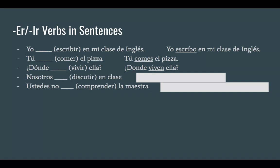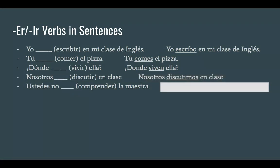We're going to do 'discutir' in the nosotros form. Take away the IR and we're left with 'discut'. The ending for nosotros — remember, this is an IR verb, and ER and IR are different here; IR is 'imos'. So discut plus imos gives us 'discutimos'. Nosotros discutimos en clase — we discuss in class.